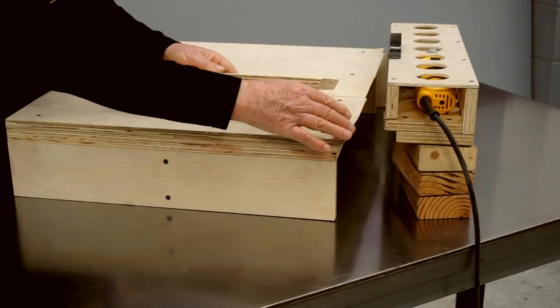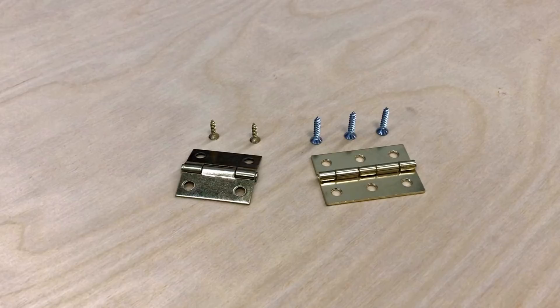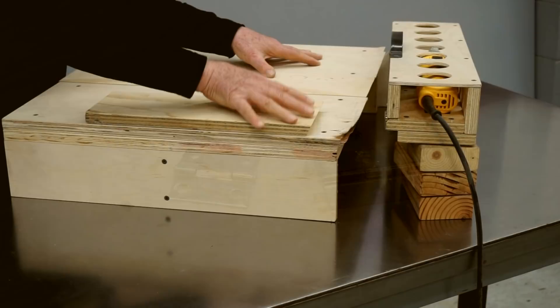Instead of putting all of the angle on this piece, I'll put half the angle on this side and half the angle on this side. That makes this corner much stronger. And instead of using a small hinge with two number four screws, I'll use a wider hinge that can take three number six screws. So all of those together will substantially increase the strength of the hinge joint.